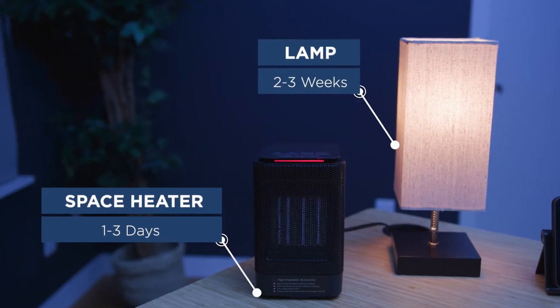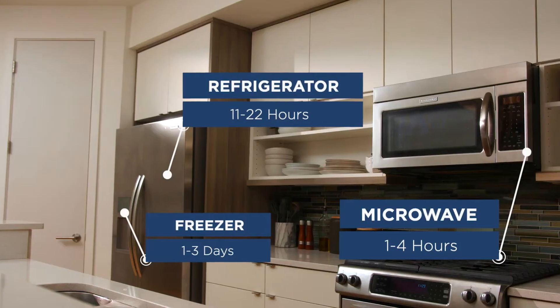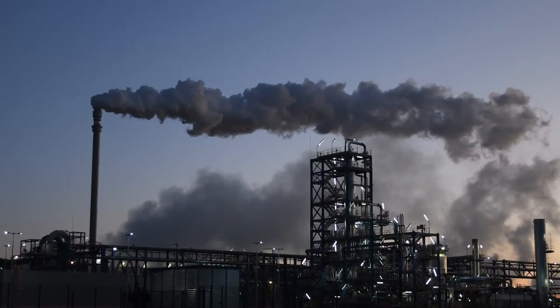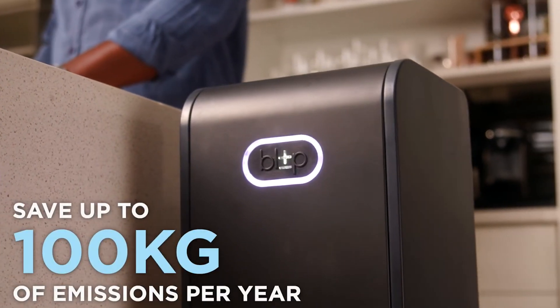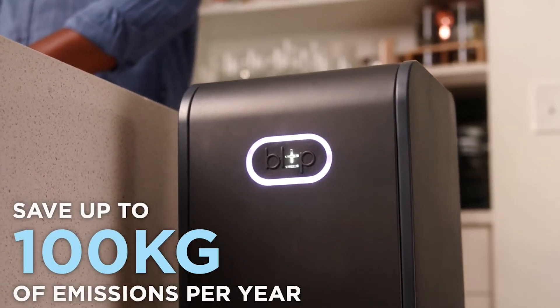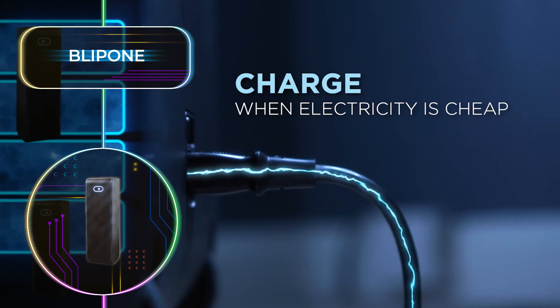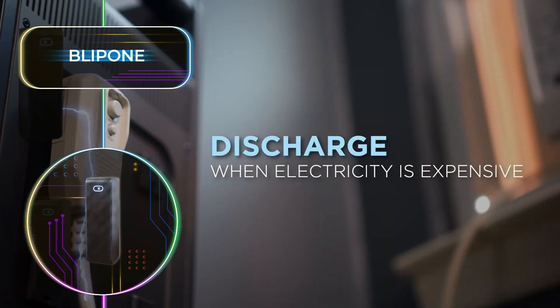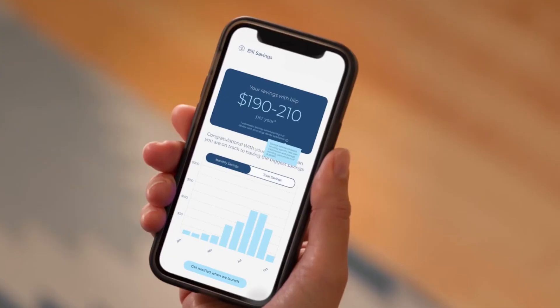Aside from that, it can also keep your freezer going for up to 3 days or your refrigerator for almost 2 days. It is estimated that with the Blip 1, you save up to 100 kilograms of emission per year. And if that isn't enough, it's designed to recharge itself when the cost of electricity is lower and use that power to connected devices during high-cost electricity times. So even while working from home, you get to save on your electricity bills.